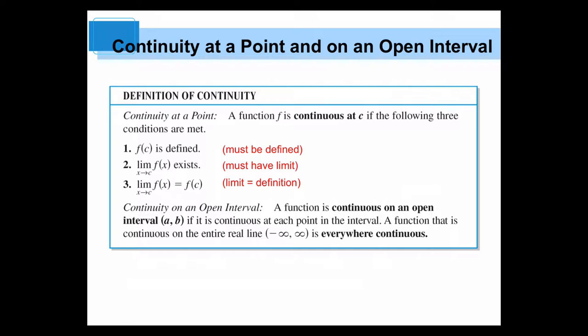This is the definition of continuity. In order for a function to be continuous, it must satisfy all three conditions. We commonly refer to the letter c as some point in the interval, some random point. It can be whatever it wants. These three conditions have to be met. First, it has to be defined. Second, it has to have a limit. And thirdly, the value of the limit has to match the value of the function.